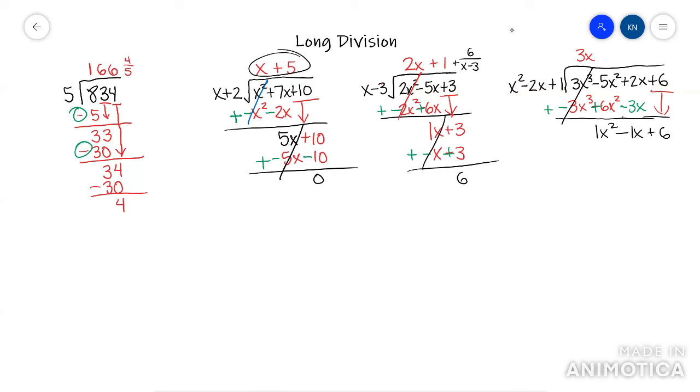The process repeats. First term divided by first term. X squared divided by X squared is positive 1. Distribute the 1. It's just going to turn into X squared minus 2X plus 1.